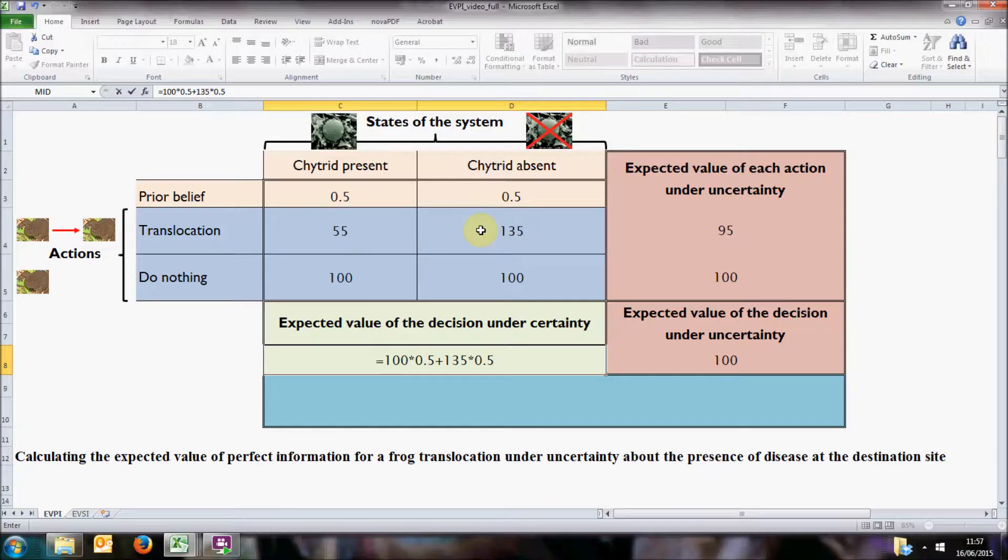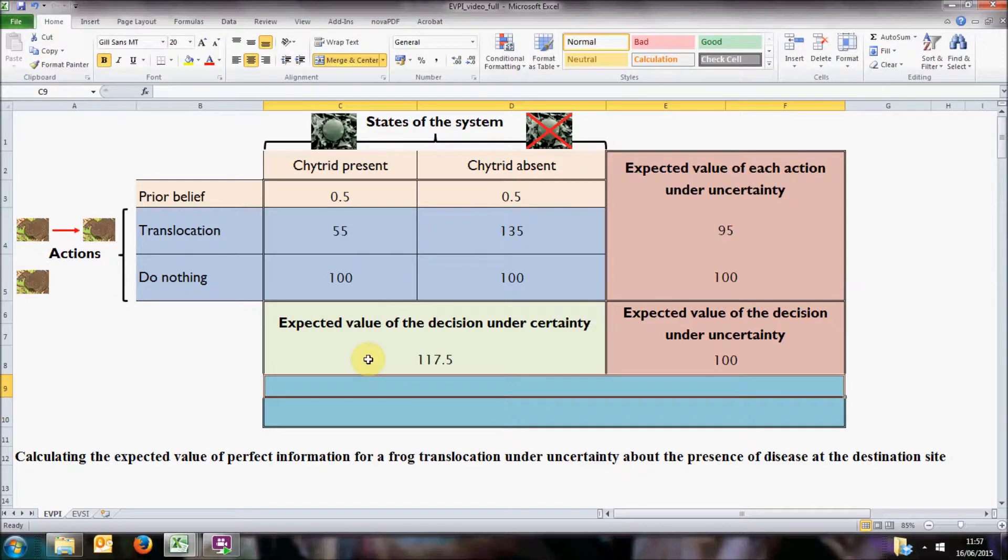So the expected value of the decision under certainty is the sum of what we would expect under each state, because we would always choose the best action, multiplied by the prior belief in each state. In this case, access to perfect information would allow us an expected outcome of 117.5 individuals.